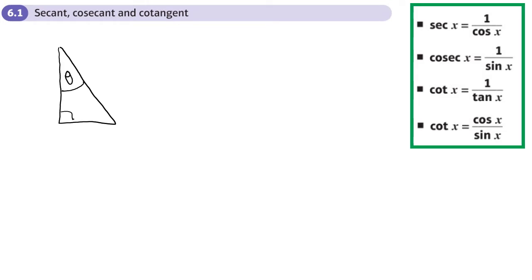So let me just draw a right angle triangle here and let's call this hypotenuse, adjacent, opposite. So we already know that SOHCAHTOA thing - sine is opposite over hypotenuse, cos is adjacent over hypotenuse, and tan is opposite over adjacent.